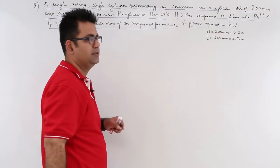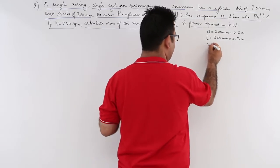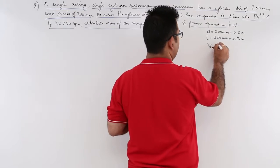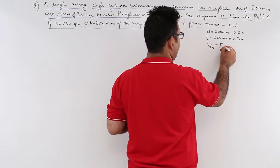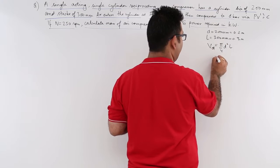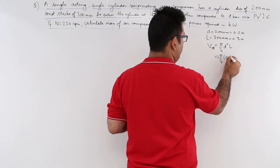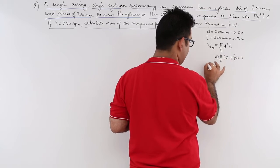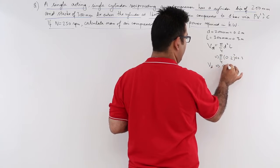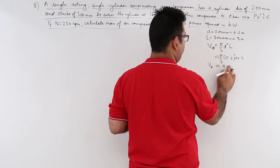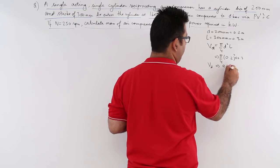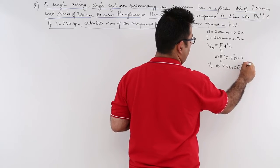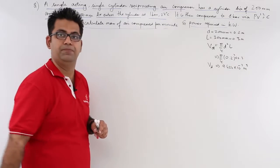Based on this information, I can find out the displacement volume. That is pi by 4 into d square into l. So putting in the values, you will have pi by 4 into 0.2 square into 0.3. This displacement volume becomes 9.424 into 10 to the power minus 3 meter cube.